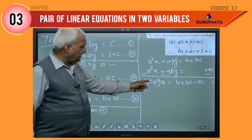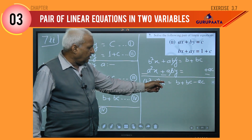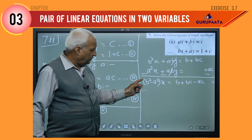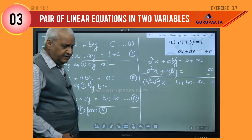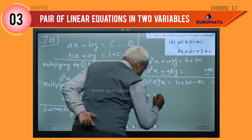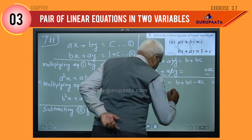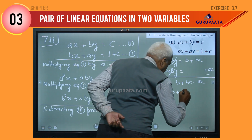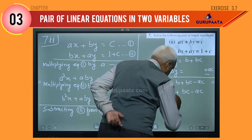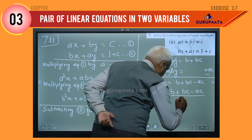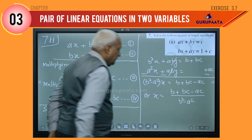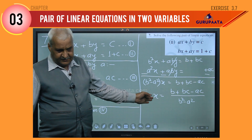We have got B² minus A² times x equal to B plus BC minus AC. From here we can find the value of x: x equals B plus BC minus AC divided by B² minus A².